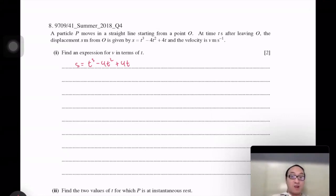Find an expression for v in terms of t. So we just do the derivative. 3t square minus 8t plus 4. That's it.